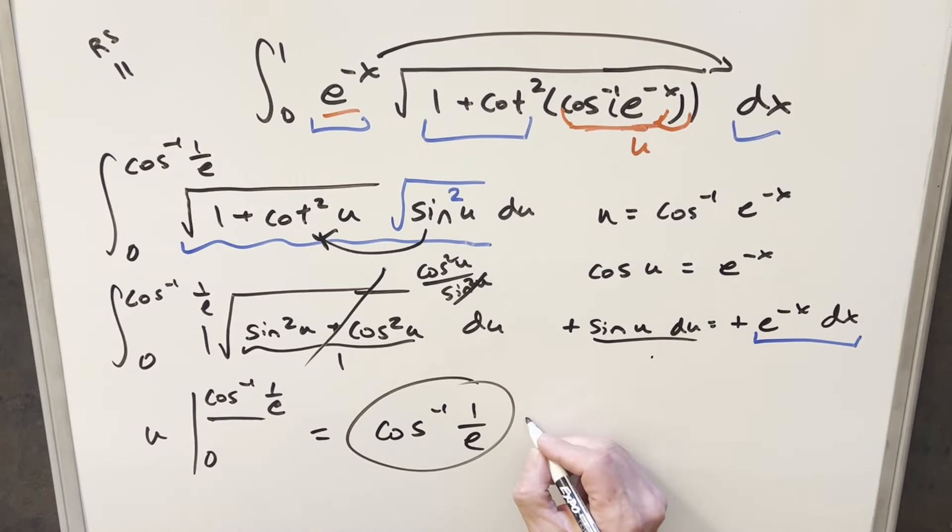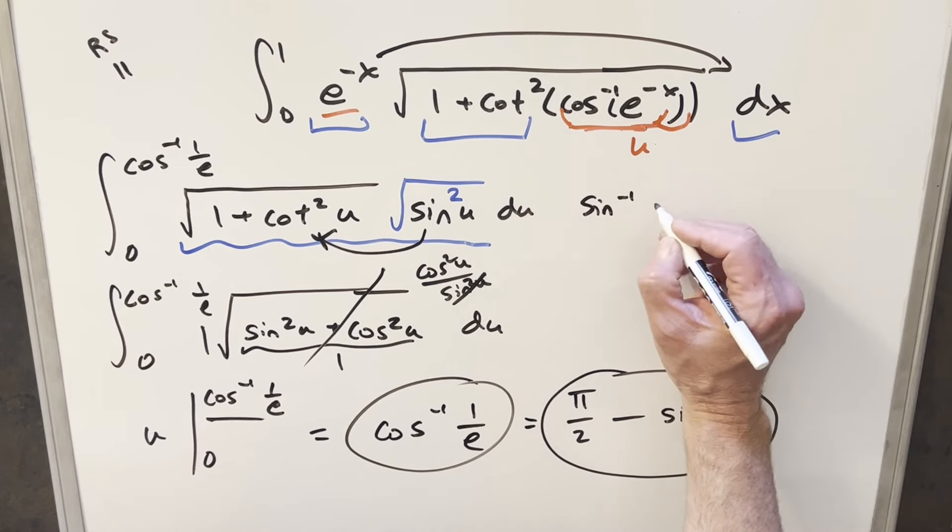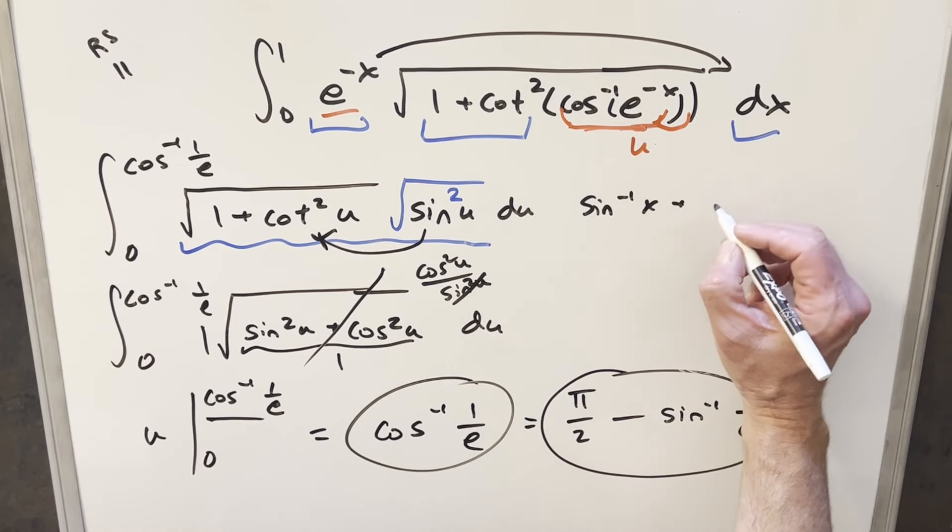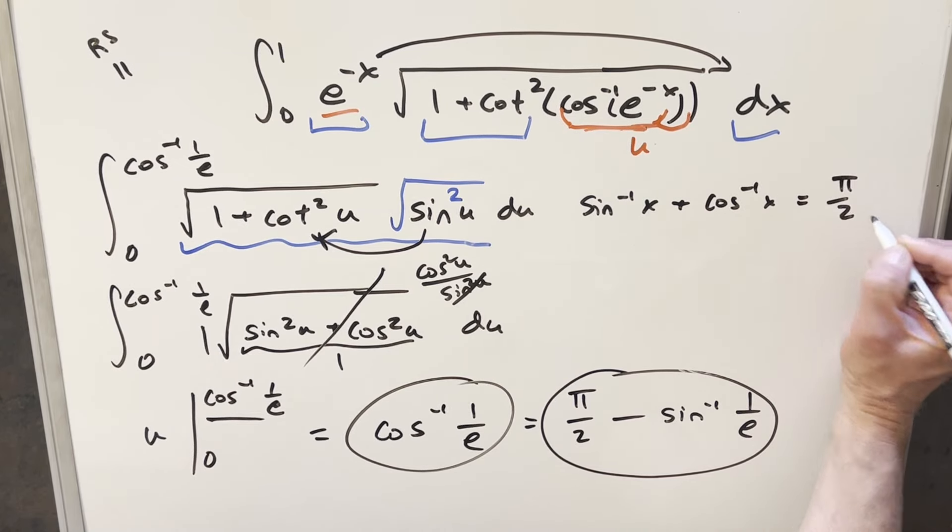And a quick note on this solution. In the answer key, they had an equivalent solution, which is pi over two minus arc sine one over e. And the reason these are equal is because we have this identity that we can say that arc sine of x plus arc cosine of x is going to be equal to pi over two.